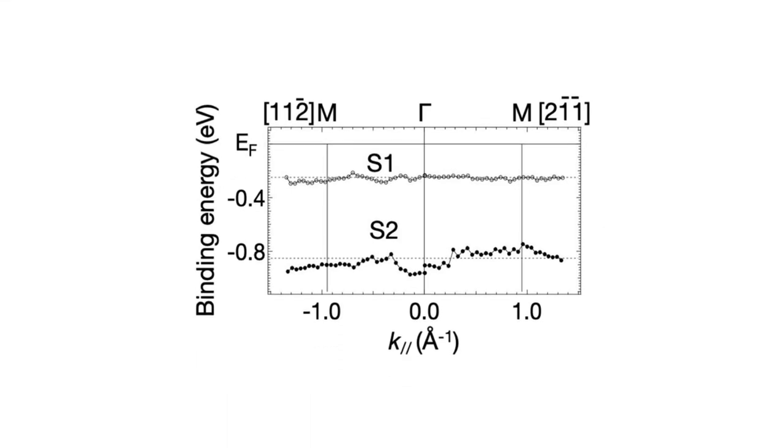Band structure measurements lead to a similar conclusion. They suggest the emergence of two itinerant surface states, S1 and S2, in the bulk band gap, with S1 believed to straddle the Fermi level closely enough to produce metallic behavior.